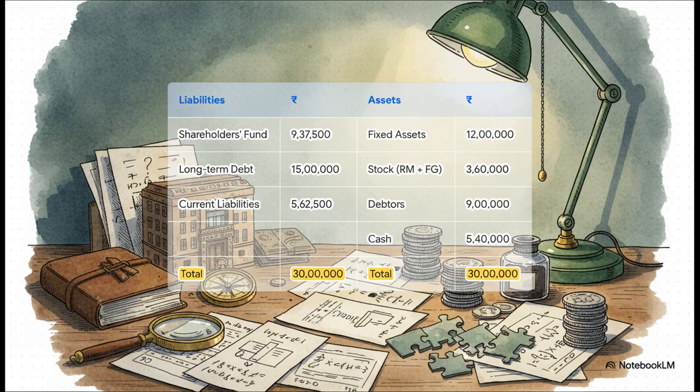Liabilities and equity on one side, assets on the other, and both sides total exactly 30 lakh rupees. This isn't magic. It's the power of financial logic. It's the proof that our deductions following that chain of clues were absolutely spot on.